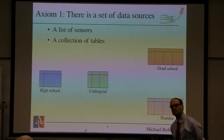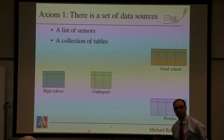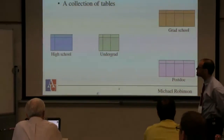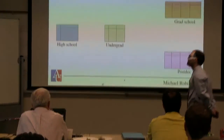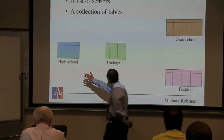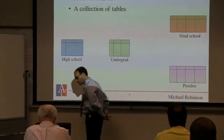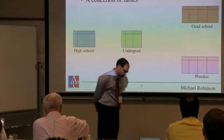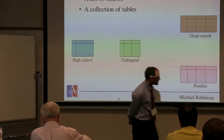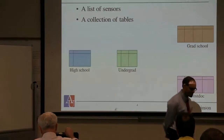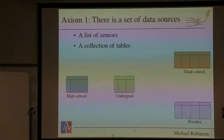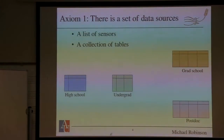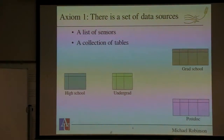Let me make this very concrete. I have a bunch of tables — records telling you about students. So some records about high school, some about undergraduate institutions, graduate institutions, and post-doc institutions. These are various tables that tell you something about the students that are there.